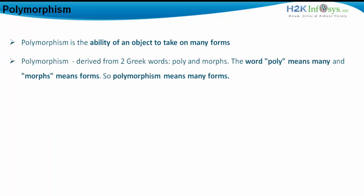Polymorphism is derived from two Greek words: poly, meaning many, and morphs, meaning forms. So polymorphism means many forms — the ability of an object to have many forms is the core concept of polymorphism.